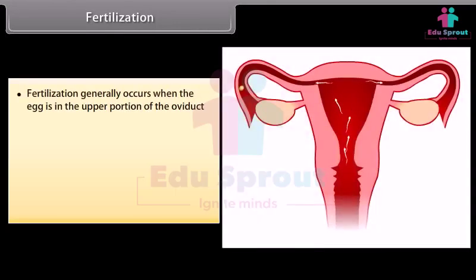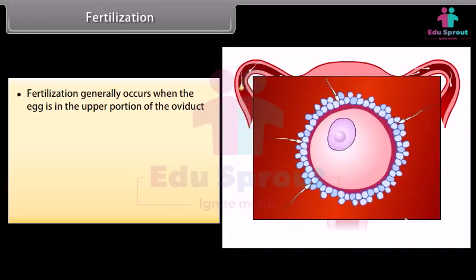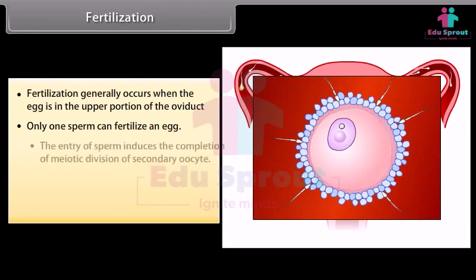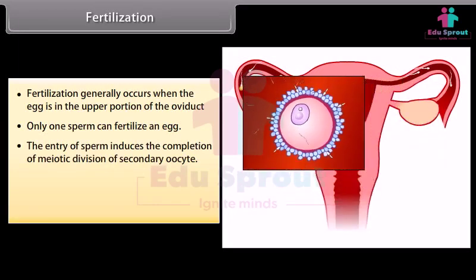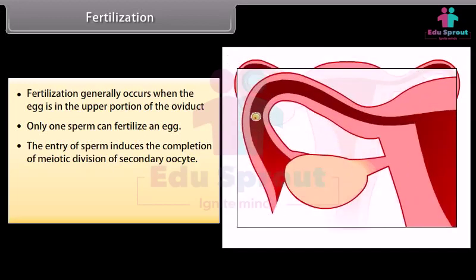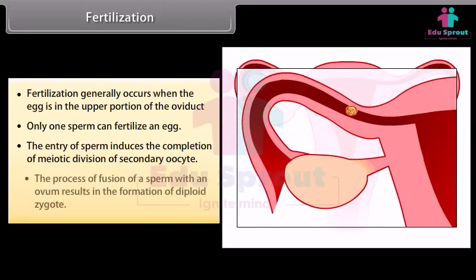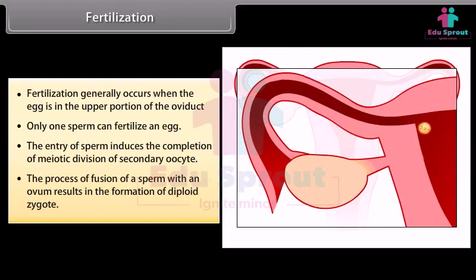Fertilization generally occurs when the egg is in the upper portion of the oviduct. Only one sperm can fertilize an egg. The entry of sperm induces the completion of the meiotic division of the secondary oocyte. The fusion of a sperm with an ovum results in the formation of a diploid zygote.